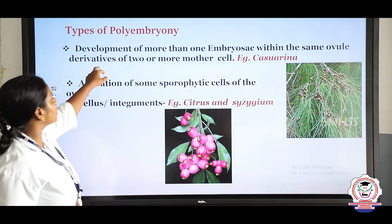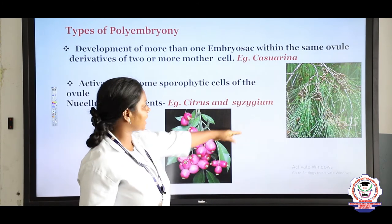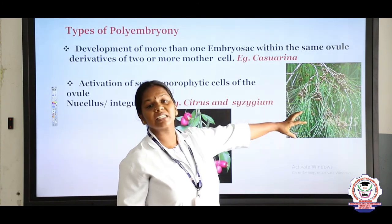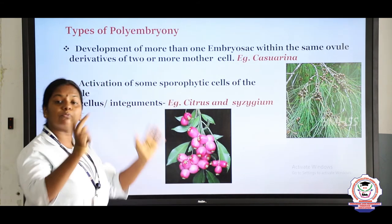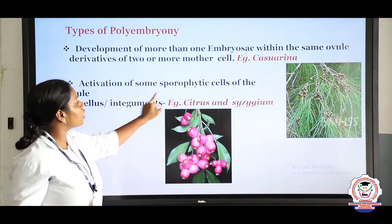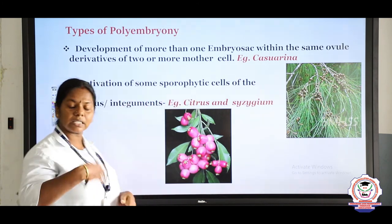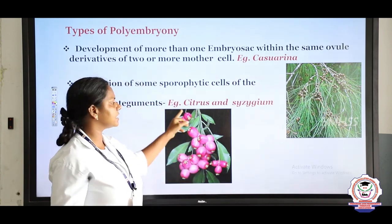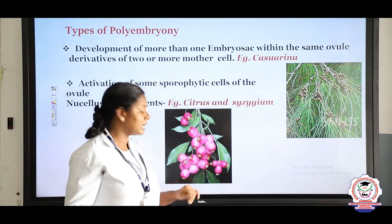Third type — development of more than one embryo sac — example is Casuarina (sabuk maram in Tamil). Fourth type — activation of sporophytic cells of the ovule, either integument or nucellus — example is Citrus and Syzygium.